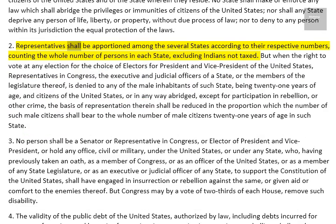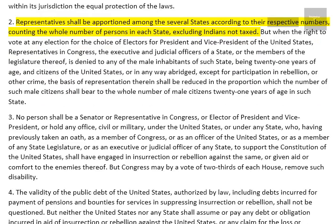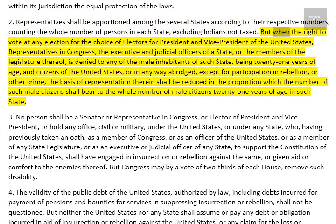2. Representatives shall be apportioned among the several states according to their respective numbers, counting the whole number of persons in each state, excluding Indians not taxed. But when the right to vote at any election for the choice of electors for President and Vice President of the United States, representatives in Congress, the executive and judicial officers of a state, or the members of the legislature thereof, is denied to any of the male inhabitants of such state, being twenty-one years of age and citizens of the United States, or in any way abridged, except for participation in rebellion or other crime, the basis of representation therein shall be reduced in the proportion which the number of male citizens shall bear to the whole number of male citizens twenty-one years of age in such state.